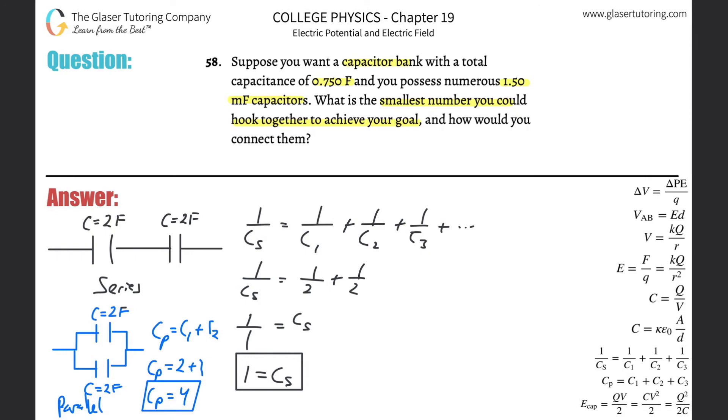Since I know I need to connect a bunch of smaller capacitors - 1.5 millifarads - and eventually bring that up to 0.75 farads, I know I have to connect them in parallel because I have to go from a small individual number to a larger one. They got to add up and sum up together.